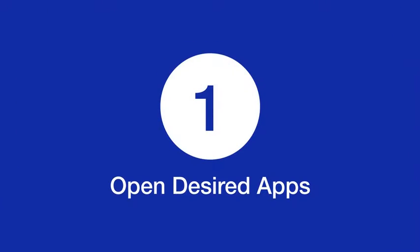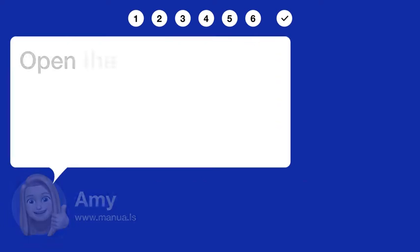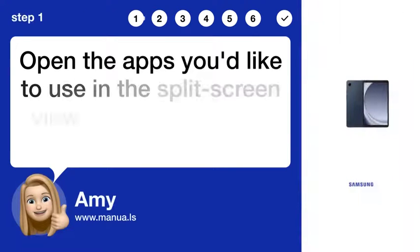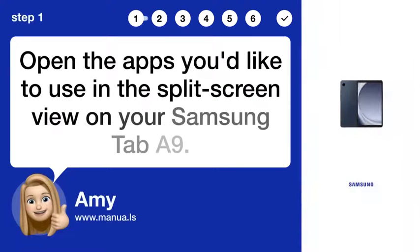Step 1: Open desired apps. Open the apps you'd like to use in the split screen view on your Samsung Galaxy Tab S9.